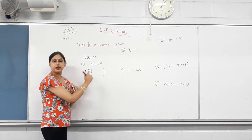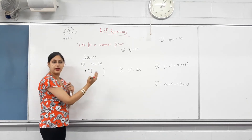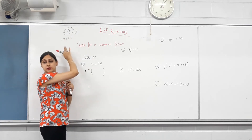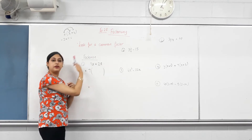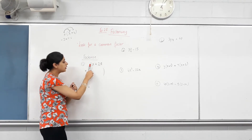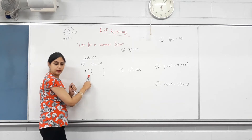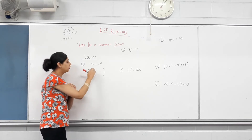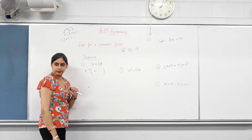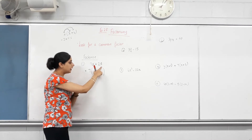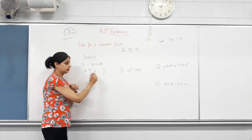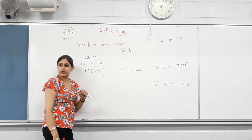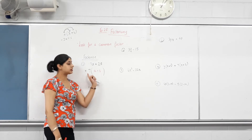So 7 is the only common factor, and it comes outside the bracket. Inside the bracket, everything gets divided by 7. Seven divided by 7 is 1, and we had 'a', so we get 1a — which we just write as 'a'. Then 28 divided by 7 is 4. So the answer is 7(a + 4). That's it — we identified the common factor, took it out, and divided every term by it.